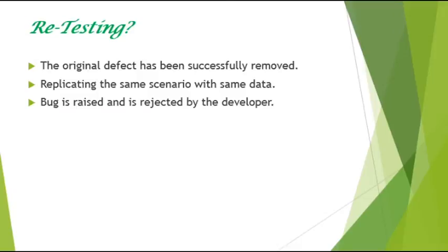Now let's look into retesting. What is meant by retesting? Once the tester detects a bug and it is fixed by the developer, the software has to be retested to confirm that the original defect has been successfully removed. This is called retesting or confirmation testing. Retesting is done mainly by replicating the same scenario in the same environment with the same data, but in the new build in which the developer has fixed the issue.